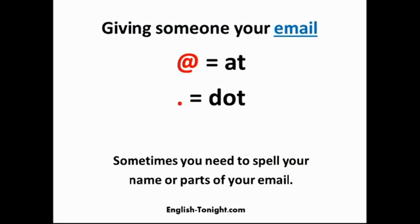Now, let's practice giving your email to someone. The first symbol we call it at, and then the second, which is usually a period, in the case of an email we call it dot. And sometimes you need to spell parts of your email, or your name, to people. So let's practice that now.